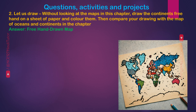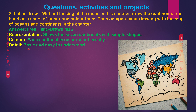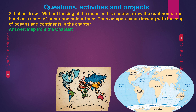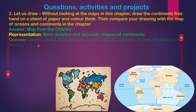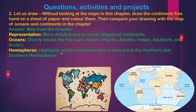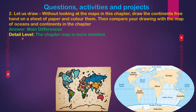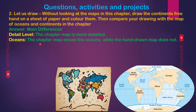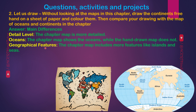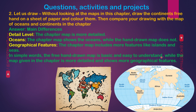Answer: the freehand drawn map shows the seven continents with simple shapes, each continent colored differently — basic and easy to understand. The map from the chapter is more detailed and accurate, clearly showing the five main oceans (Pacific, Atlantic, Indian, Southern, and Arctic), highlighting which continents and oceans are in the Northern and Southern Hemispheres, and including additional features like islands and specific seas such as the Arabian Sea and Bay of Bengal. Main difference: the chapter map is more detailed, shows the oceans, and includes more geographical features, while the freehand map is basic and easy to understand.